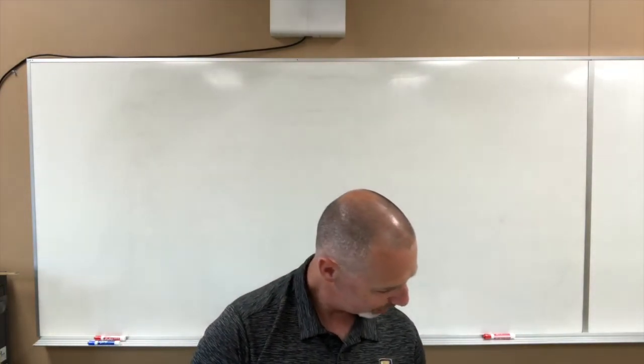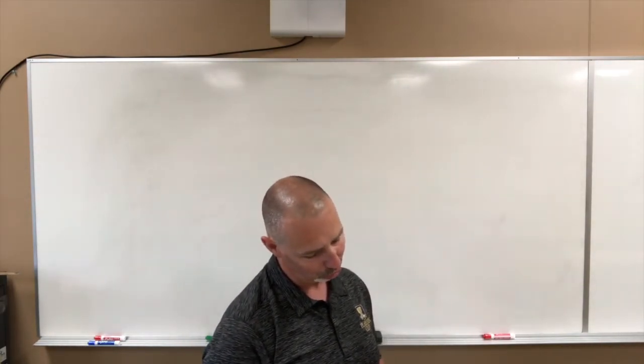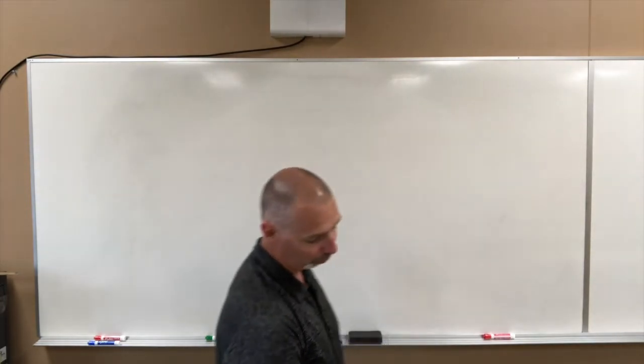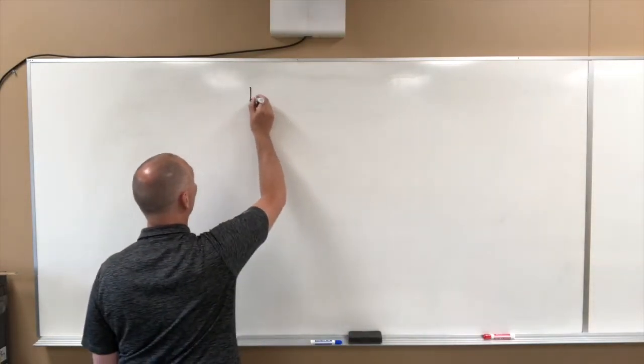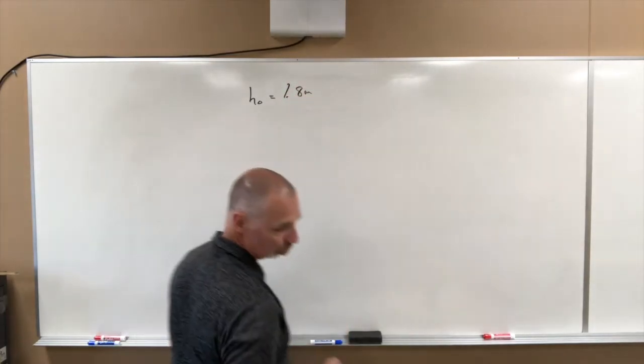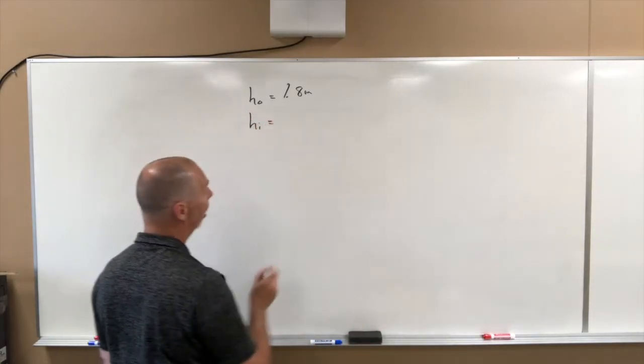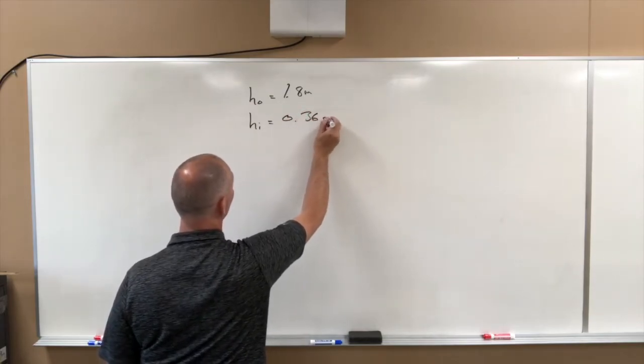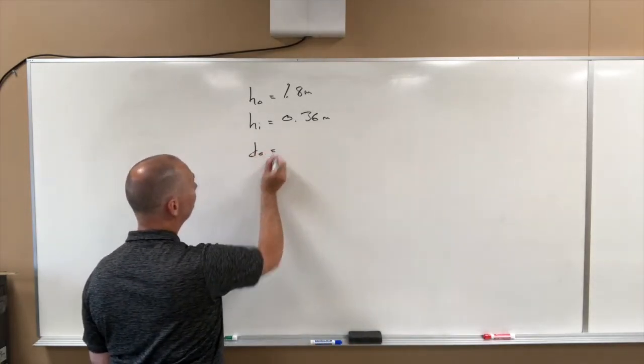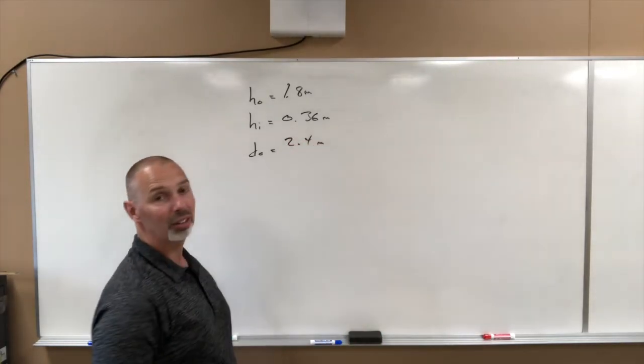Question 21 says, we have a 1.88 meter tall girl stands 2.4 meters from the store's security mirror. Her image appears to be 0.36 meters tall. What is the focal length of the mirror? So we have a HO, a height of our object, that's the height of the girl, 1.8 meters. The mirror shows her height to be 0.36, so that's HI equals 0.36. And she stands, so the DO equals 2.4 meters. And again, we are asked to find the focal length.